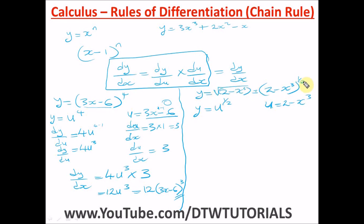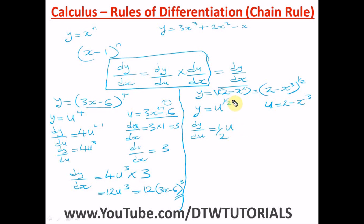Recall from indices that a square root is equivalent to raising to the power of one half. So y = u^(1/2). Now find dy/du: bring down the half, giving dy/du = (1/2) × u^(1/2 − 1) = (1/2)u^(−1/2).